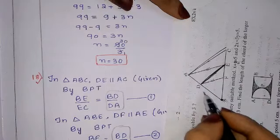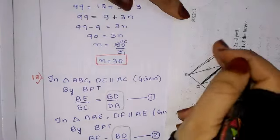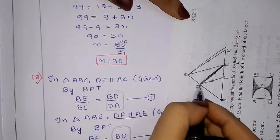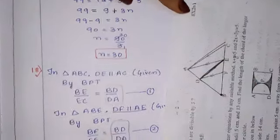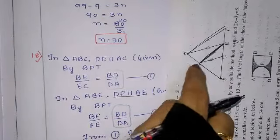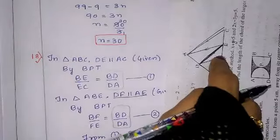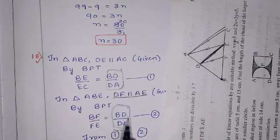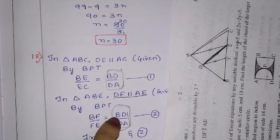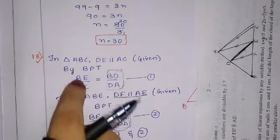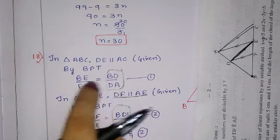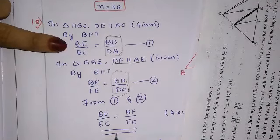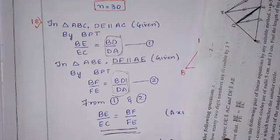Now in triangle ABE, DF is parallel to AE. By BPT again: BD/DA = BF/FE — equation 2. Since equations 1 and 2 both equal BD/DA, by the axiom that things equal to the same thing are equal to one another, BE/EC = BF/FE. This is what was required to prove.